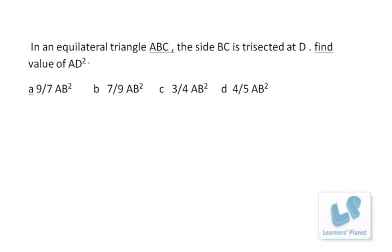Now let's see this problem. In an equilateral triangle ABC, the side BC is trisected at D. Find the value of AD square. First of all, I just draw an equilateral triangle over here. This is the triangle...